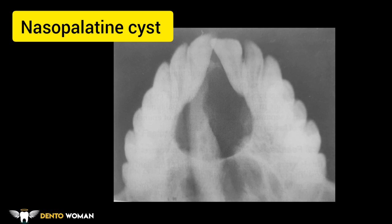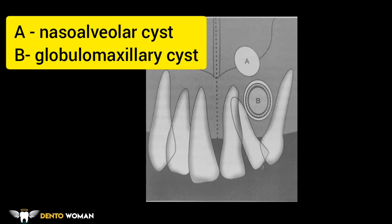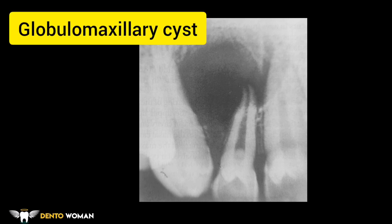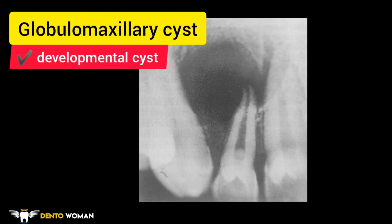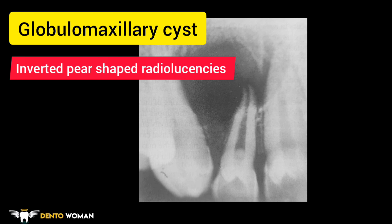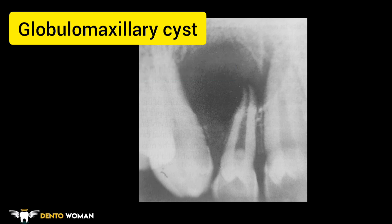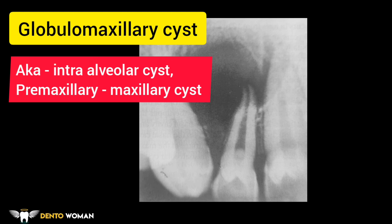Here is the schematic representation of the nasoalveolar cyst (denoted A) and the globulomaxillary cyst (denoted B), showing their particular locations. The globulomaxillary cyst is seen on a cropped panoramic radiograph between the maxillary lateral incisor and canine. It occurs in the globulomaxillary region and is considered an inclusion or developmental cyst arising from entrapped non-odontogenic epithelium in the globulomaxillary suture. On a radiograph it appears as an inverted pear-shaped or inverted teardrop-shaped radiolucency, which is characteristic. Its other names are intra-alveolar cyst or premaxillary-maxillary cyst.